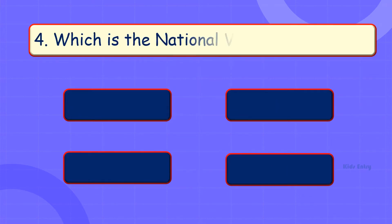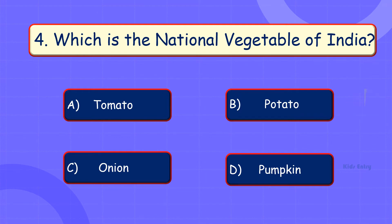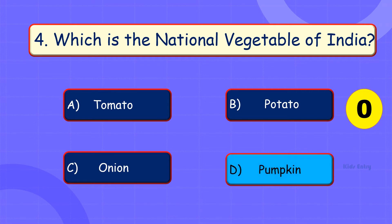Which is the national vegetable of India? A. Tomato. B. Potato. C. Onion. D. Pumpkin. Answer is Option D: Pumpkin.